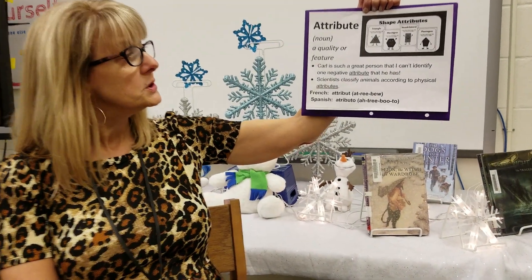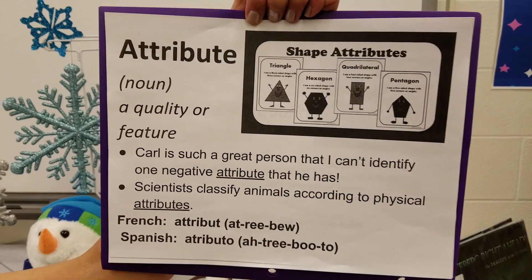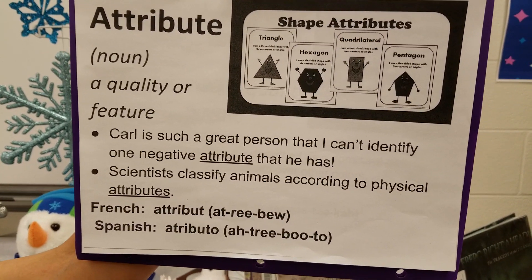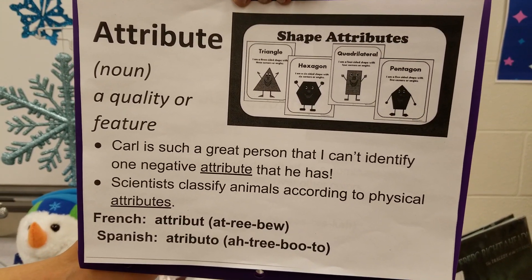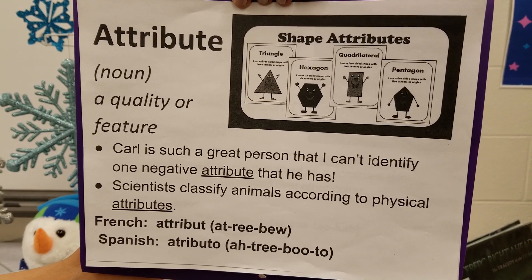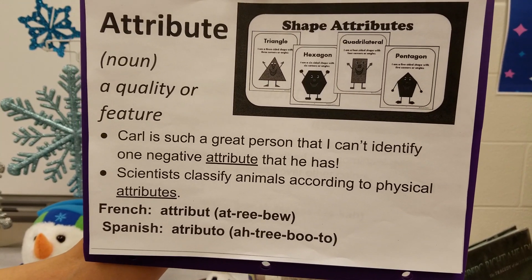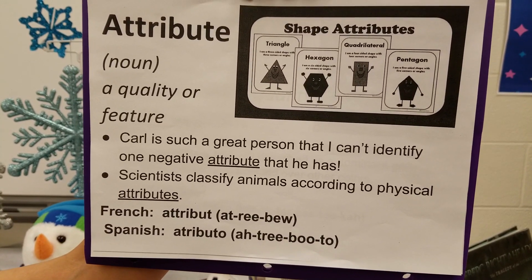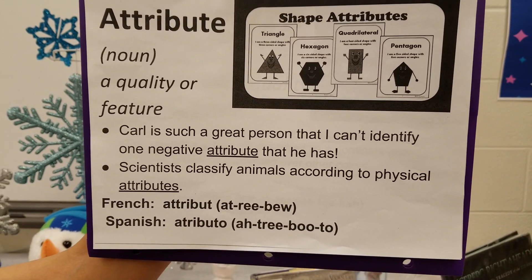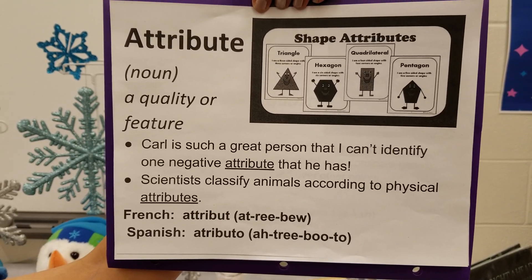The first one is attribute. It is a noun. A quality or feature is the definition. Examples in sentences: Carl is such a great person that I can't identify one negative attribute that he has. Scientists classify animals according to physical attributes. And then, as always, we have the French and the Spanish pronunciation at the bottom.